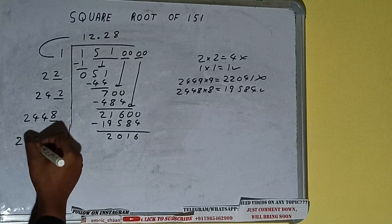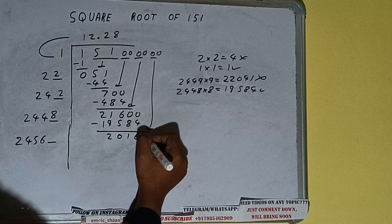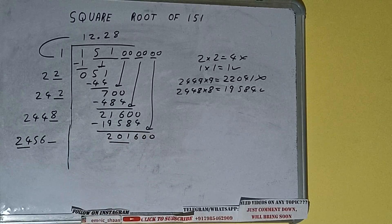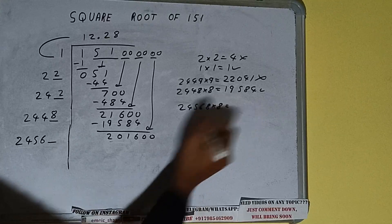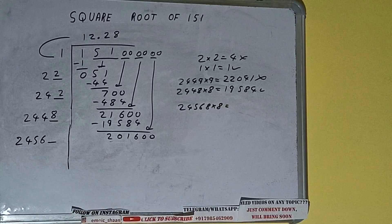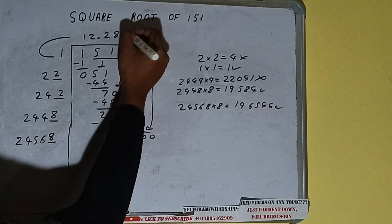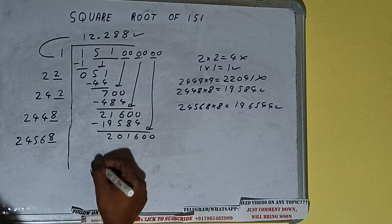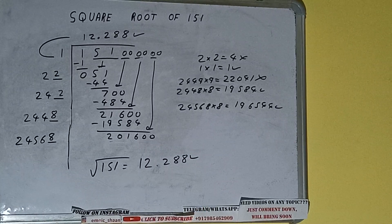2448 into 8 we did, so add both: 2448 plus 8 will be 2456, and one digit extra. Bring the next pair of zeros down and it will be 201600. Compare 24 with 201: 24 times 8 is 192, so we can try 8 times — 24568 into 8. We'll be getting 196544, which is good to take. So 8 here and 8 here. We don't need to calculate further because we got the answer correct up to three decimal places: the square root of 151 is 12.288.